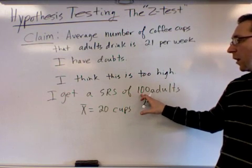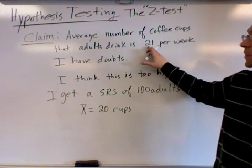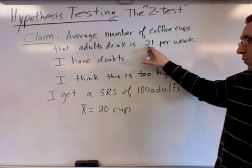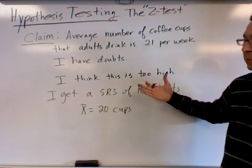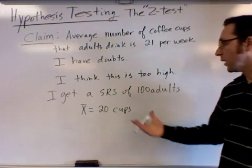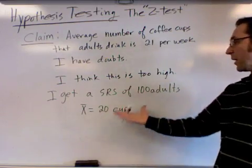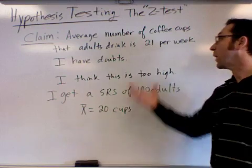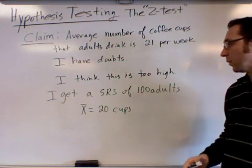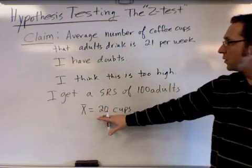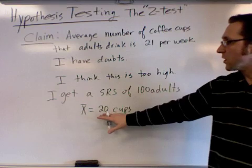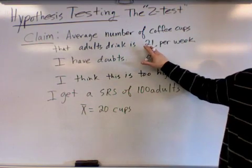I mean, my 100 adults aren't bound to get automatically an average of 21 cups. The group that I have, for just sampling variability, would probably not have 21, would probably be different than the population's average. So is this far too far away from here to actually believe that this is true, or is this close enough to make us believe that this is true?